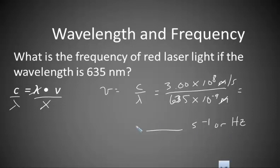So I want you to solve for that problem. In your calculator, you can just go 3e to the 8th divided by 635e negative 9, and you'll get your answer in how many waves pass a point per second with red laser light.